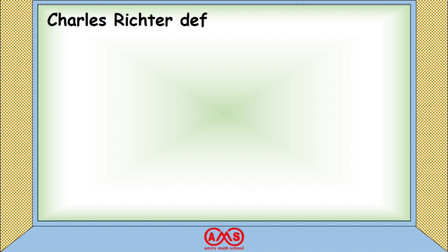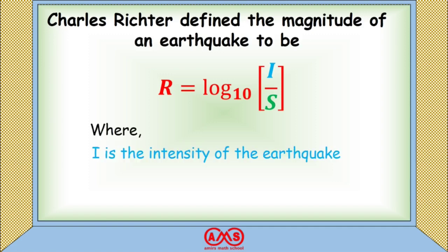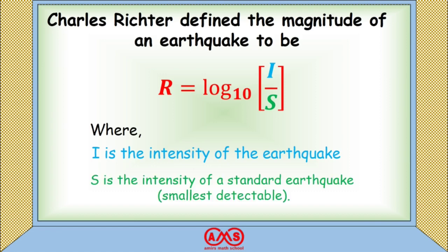Charles Richter defines the magnitude of an earthquake to be R = log₁₀(I / S), where I is the intensity of the earthquake and S is the intensity of a standard earthquake — that is, the smallest detectable earthquake.